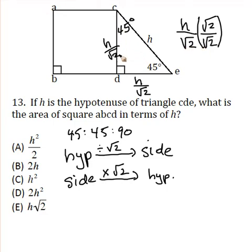So we know this side is h over radical 2, and that's one side of the square. Sides of squares are all equal, so that's h over radical 2. Now, what is the question asking? What is the area of the square? The area of the square is just going to be side times side.